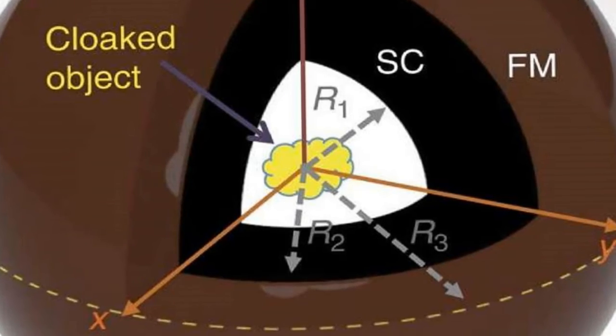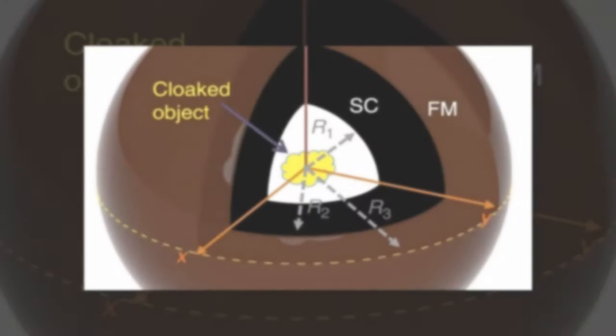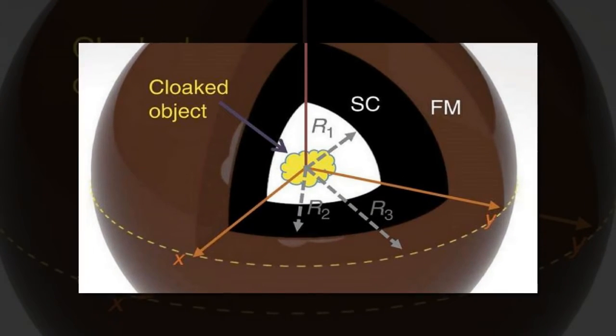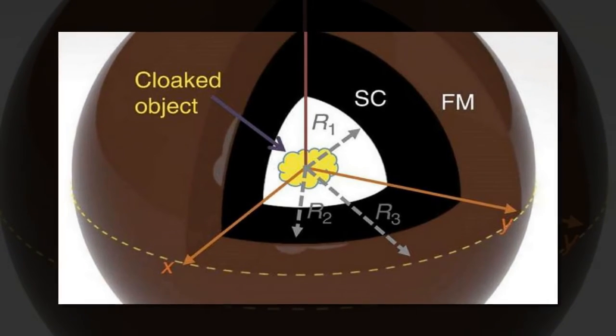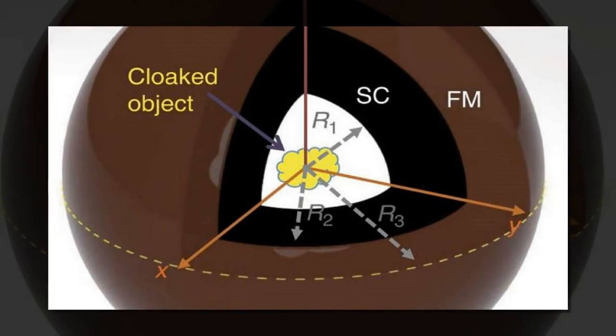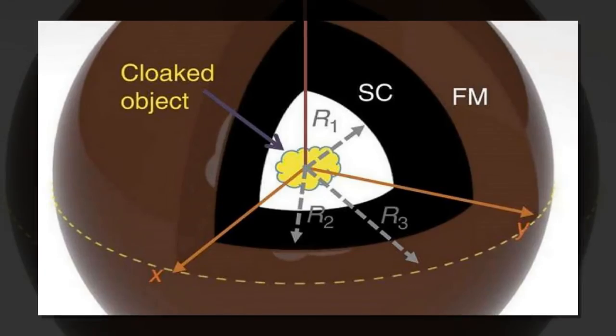First demonstrated in 2012 by Alvaro Sanchez and colleagues at the Autonomous University of Barcelona, the cloak has a spherical structure consisting of two shells.